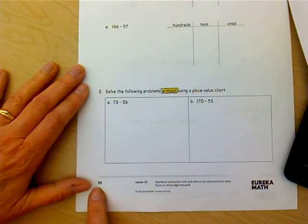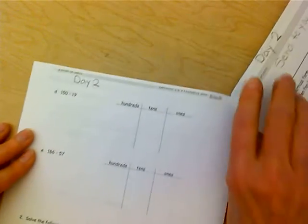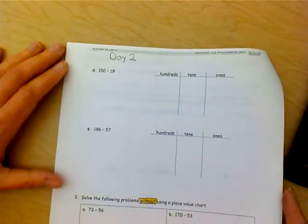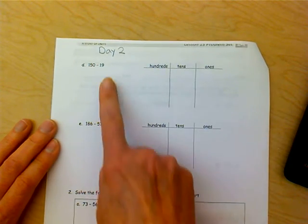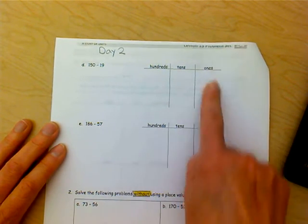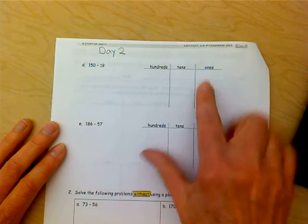And so now we're going to move on to page 92 and we are going to start day two. So on day two, you are going to work problem D and E. Problem D and E on day two, make sure you use the chip model.